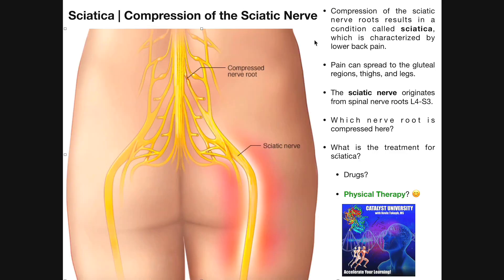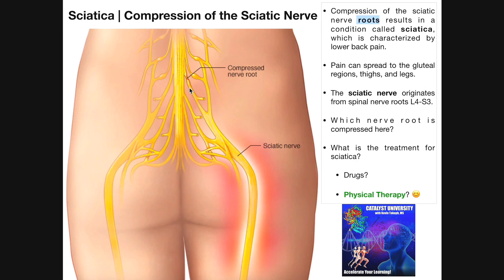Now let's talk about some conditions of the sciatic nerve. The first is sciatica — very painful. This is where you have compression of the sciatic nerve roots specifically. Notice here we have a compressed nerve root. The sciatic nerve originates from spinal nerve roots L4 to S3, so it could be any one of those. When one or more of these roots are compressed, it causes pain in this region referred to as sciatica. The pain is usually in the lower back but can radiate downward into the gluteal regions, the thighs, and even the legs.